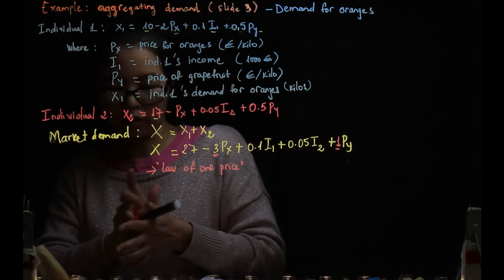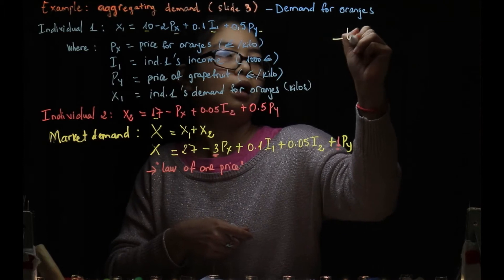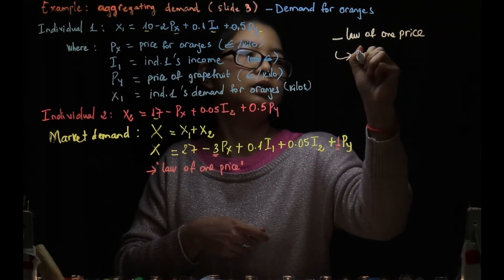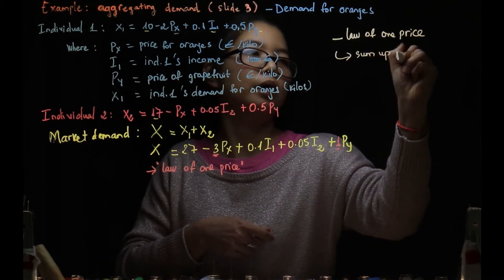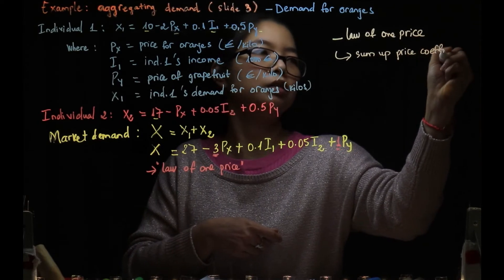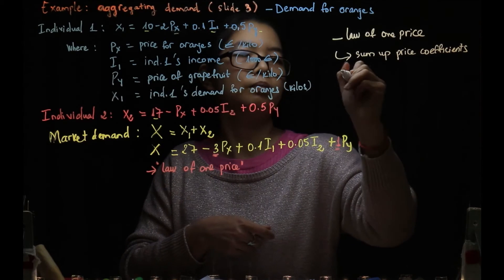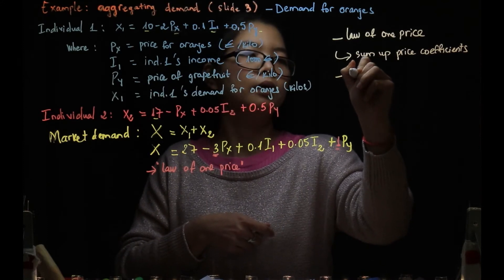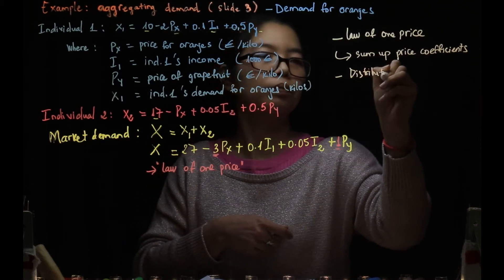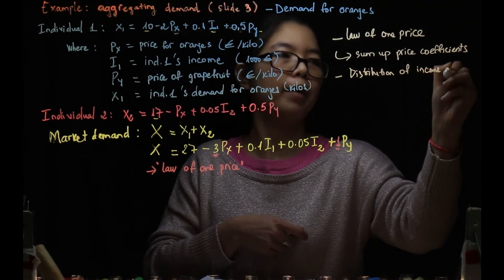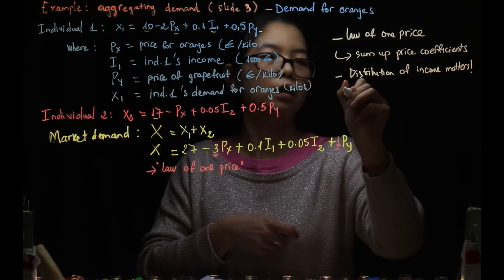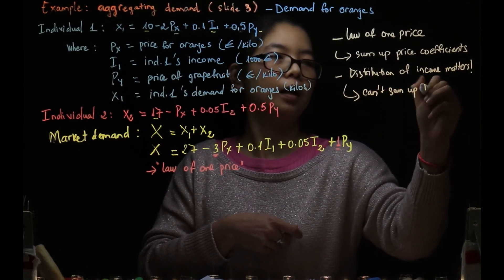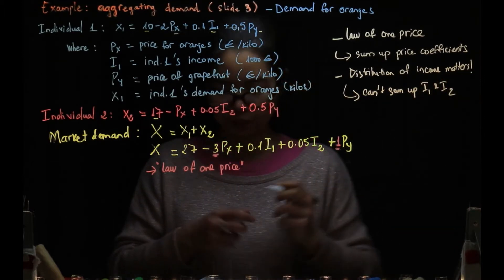So let's write here again. First, law of one price allows us to sum up price coefficients—use px, px, px. The second is distribution of income matters, so we don't sum up I1 and I2. Okay, let's stay.